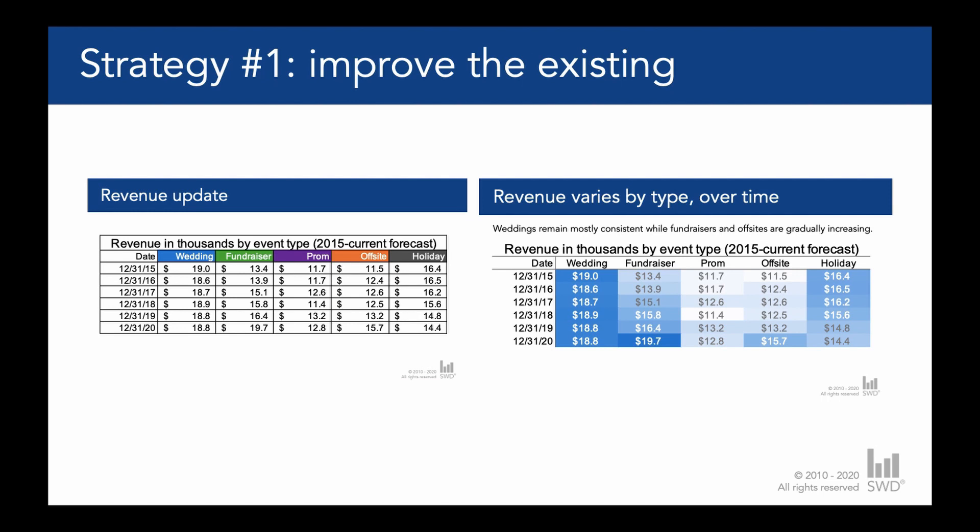So if we're told that we absolutely must use a table, check out the difference with strategy number one — not completely replace what's there, but rather improve the existing. By rethinking how we can use color as a visual cue and adding words to tell our audience where to look in the table, we've improved the existing table. And while this is certainly an improvement, you might want to take it a step further and make the case for not using a table.